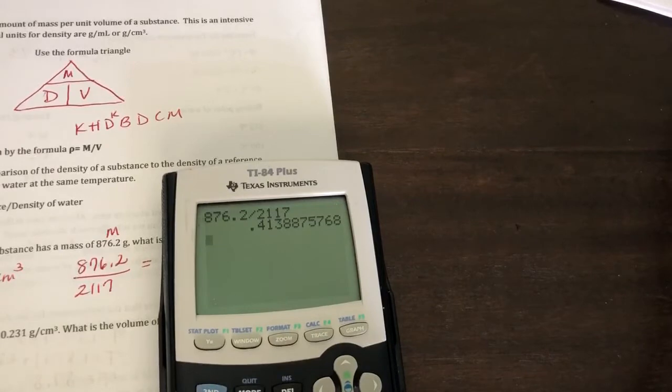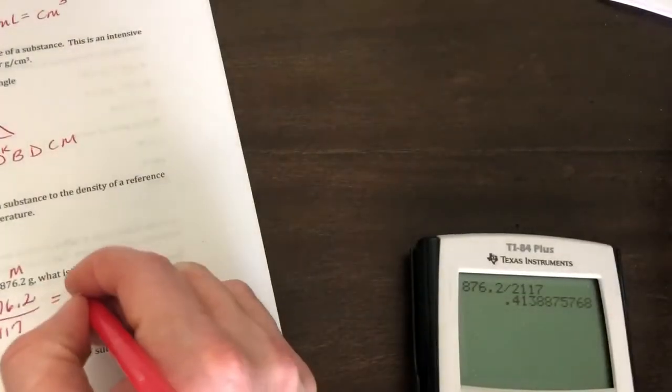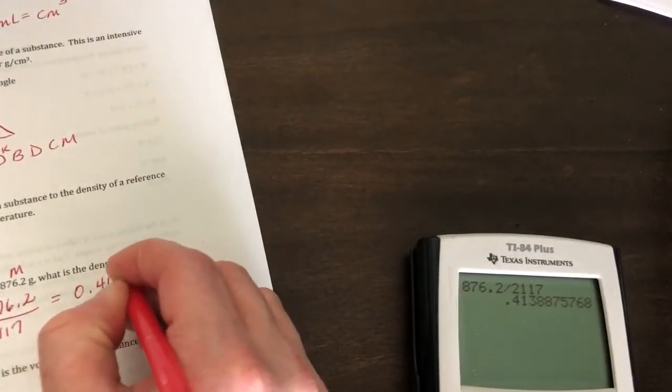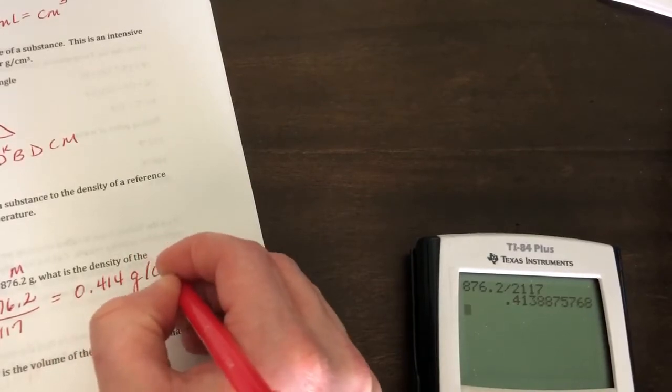And I get my answer. So I get 0.414 and we're in grams per centimeter cubed.